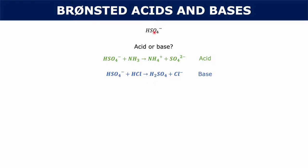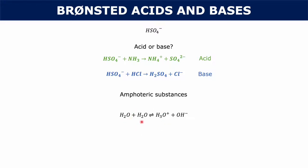Whenever you're given a compound, you can't really tell — that compound could act as an acid or a base, and you just have to see it in a chemical equation to know. These are called amphoteric substances: substances that can act as both an acid or a base. A really common example is water. Water can react with itself to produce hydronium and hydroxide — one water acts as an acid, one acts as a base; one gives off a proton, one accepts a proton. So water is amphoteric.